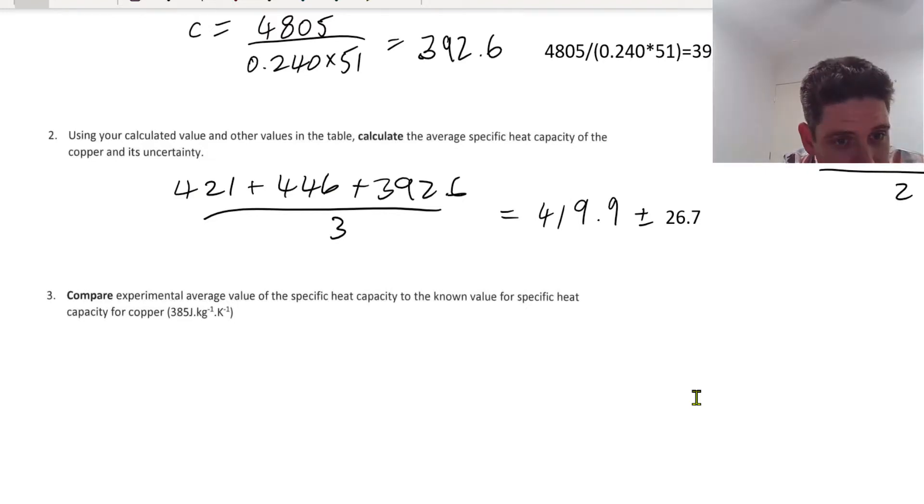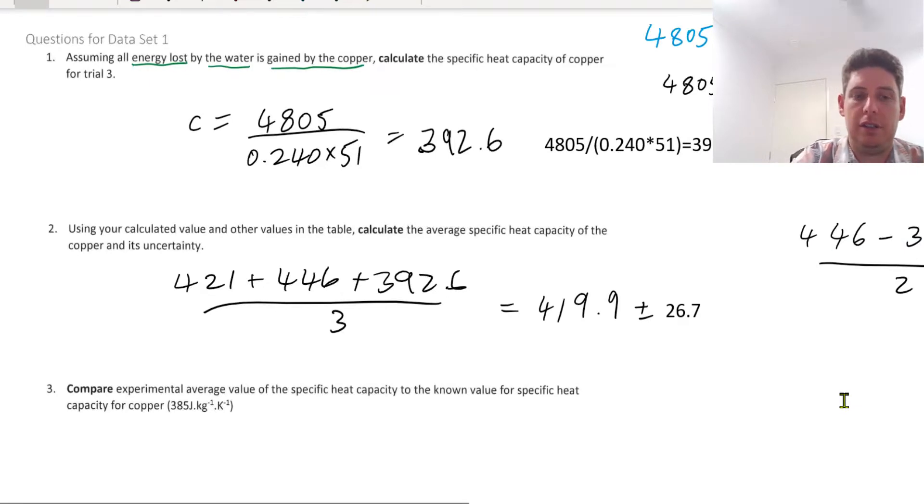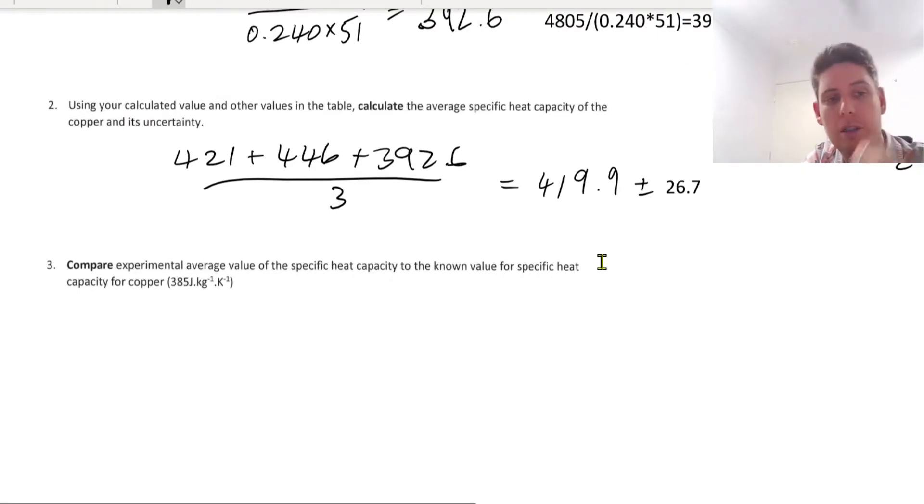So next, compare the experimental average value of the specific heat capacity to the known value for specific heat capacity for copper. So we know that copper is 385 specific heat capacity. And this is less than the average specific heat capacity that we calculated.